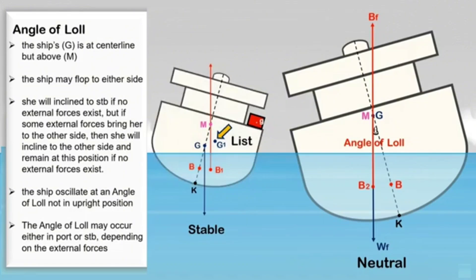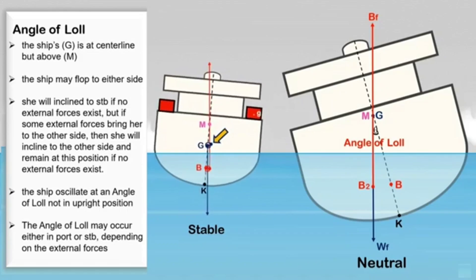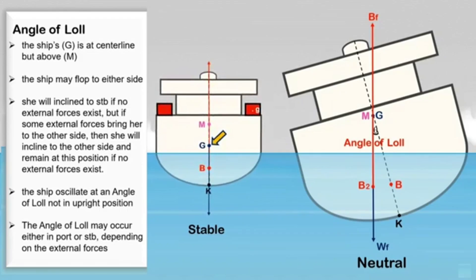List is easier to correct compared to the angle of loll. To correct a list, weight can be added to the other side until the ship's center of gravity is along the centerline. Be sure to calculate the ship's KG before doing this, since adding weight above the ship's center of gravity will cause G to rise.